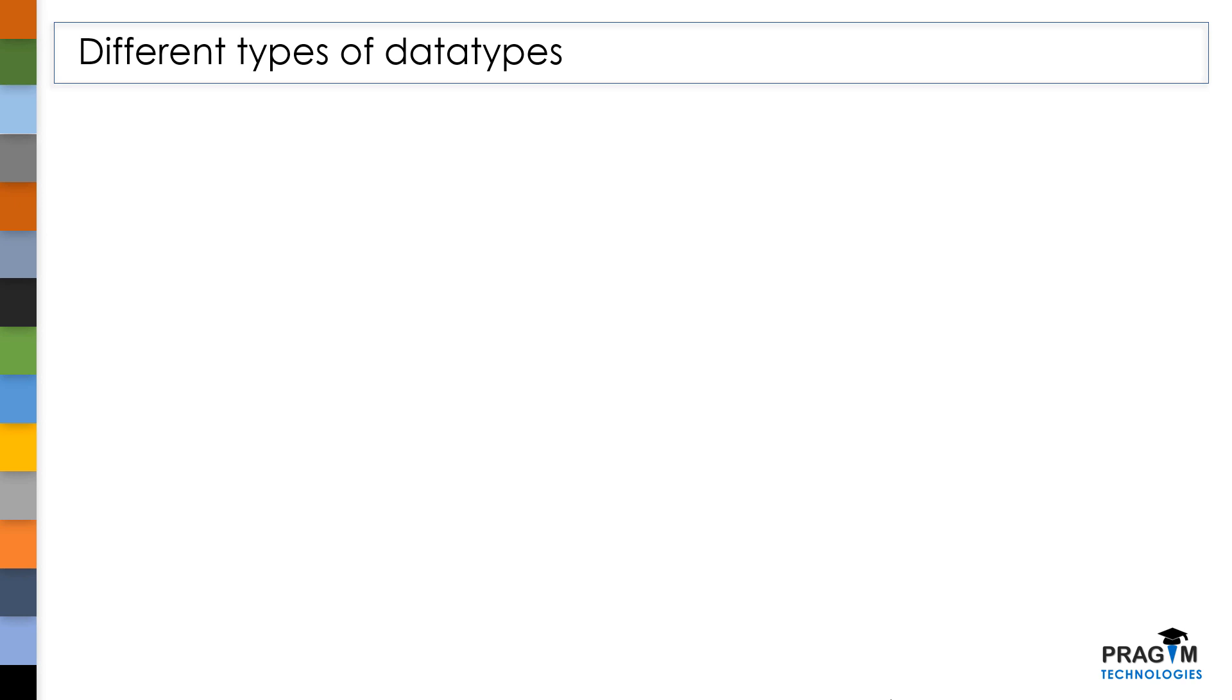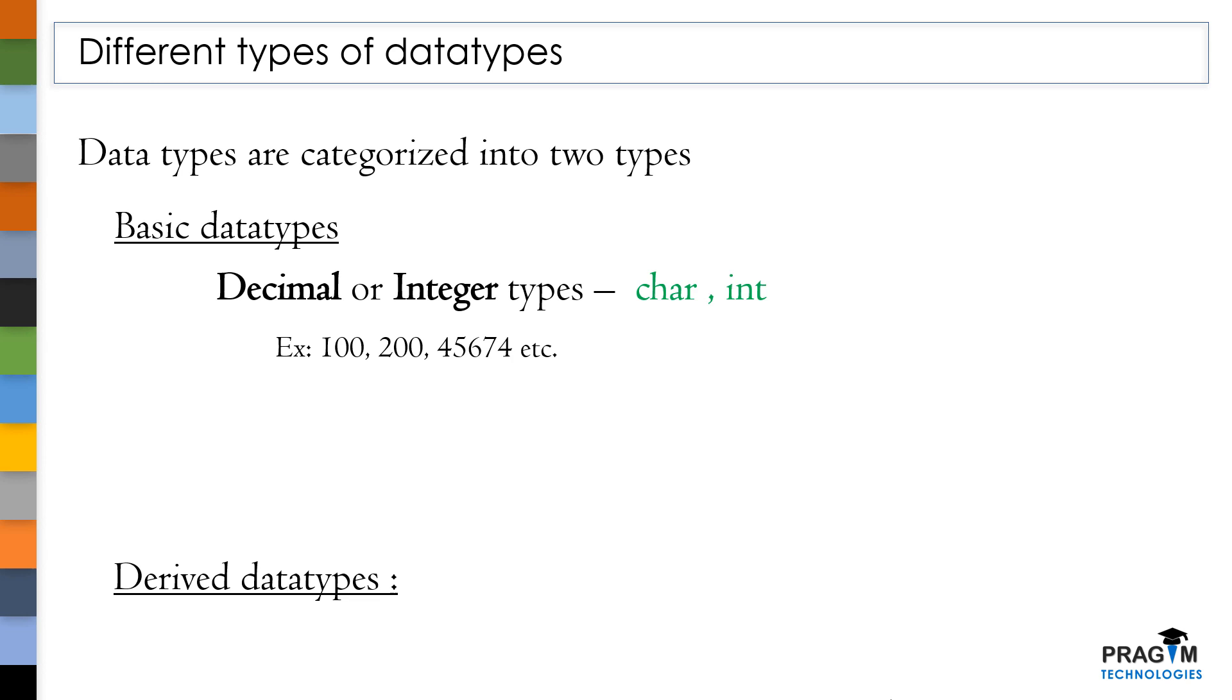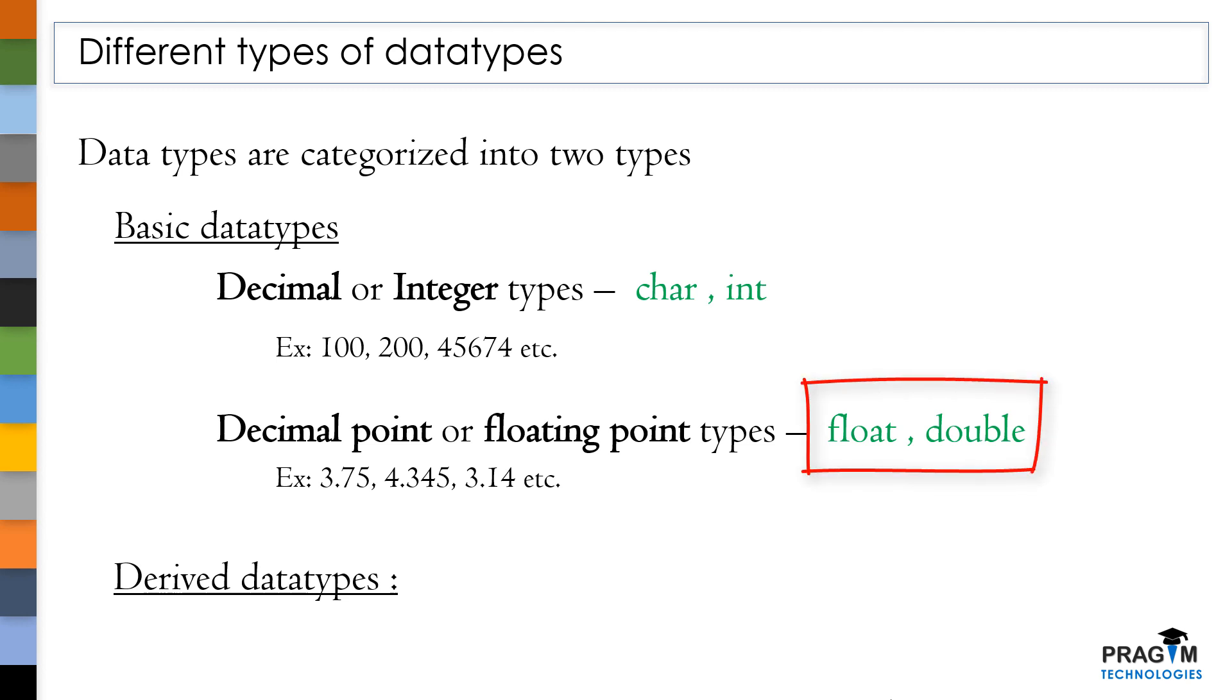As per C standards, data types are classified into two types. They are basic data types and derived data types. In basic data types, the values such as decimal or integer type values can be stored using char or int data types. And decimal point or floating point values such as 3.14, 2.37 and etc. These values can be stored using float or double data type.